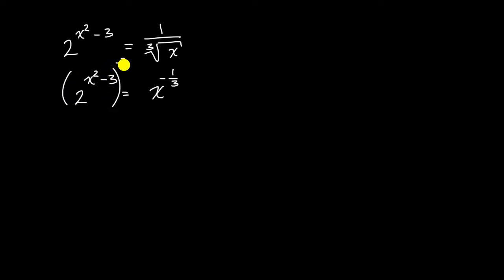Maybe I can simplify it by raising both sides to the negative three power. And so then I would get, if I raise something to an exponent, then raise that to an exponent, I can just multiply the exponents. So it would be two to the negative three x squared plus nine power.